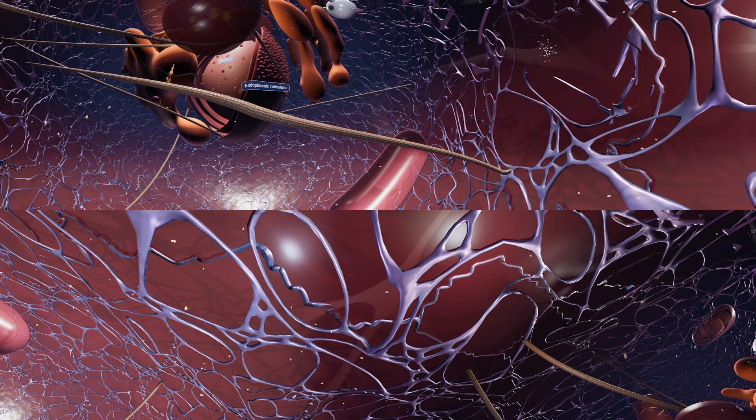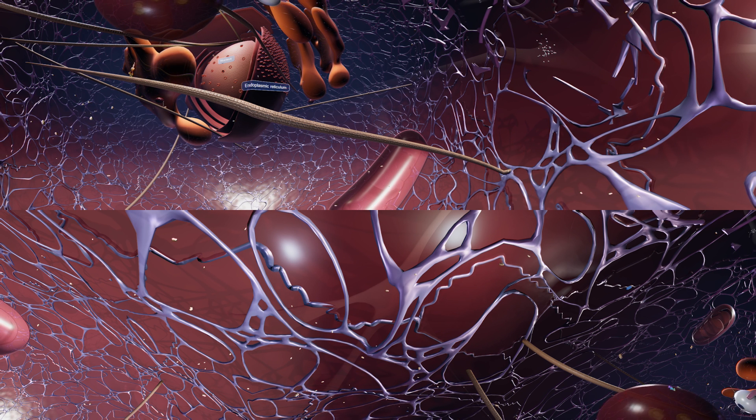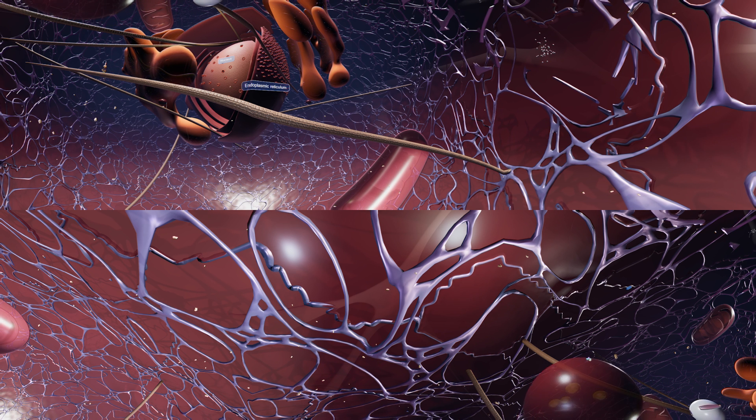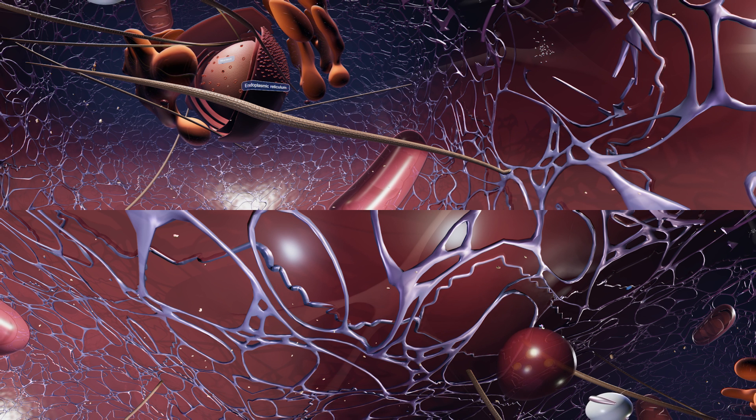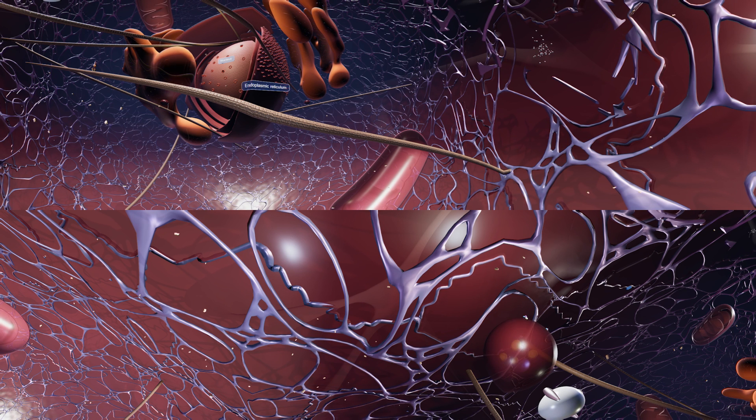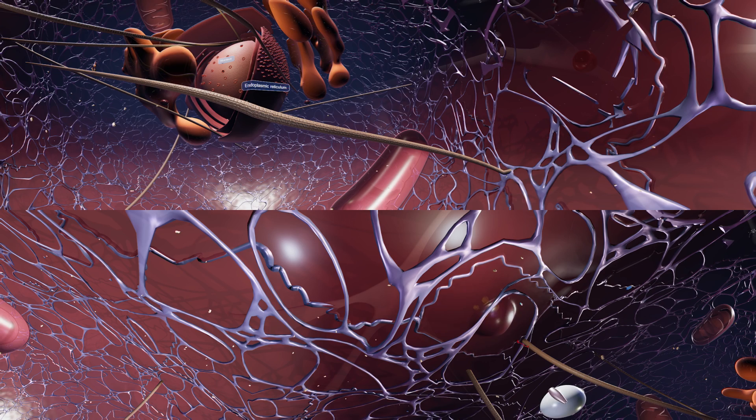This structure becomes known as a multivesicular body or MVB. The MVB is then carried to the cell surface along protein tracks. When the MVB fuses with the cell surface it leads to the release of the vesicles inside the multivesicular body. When these vesicles are released by the cell they become known as exosomes.